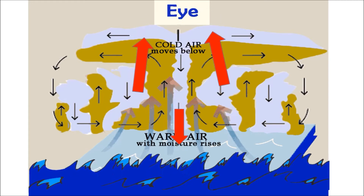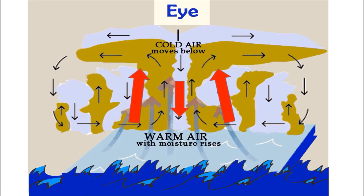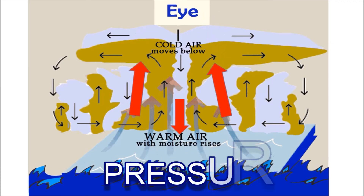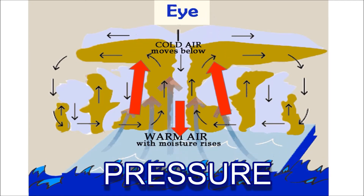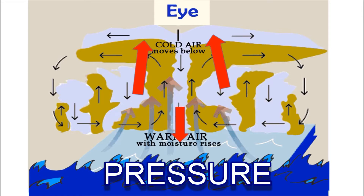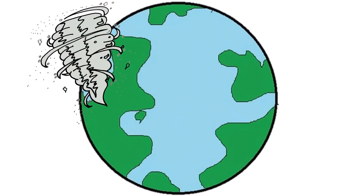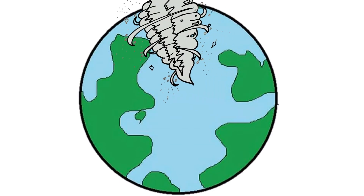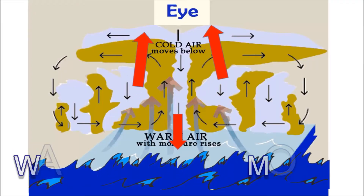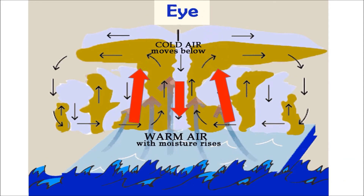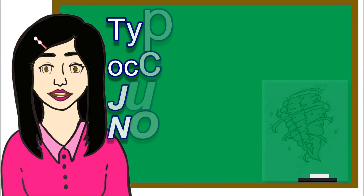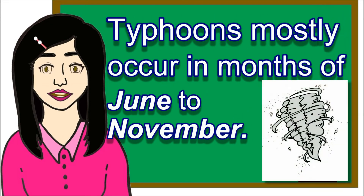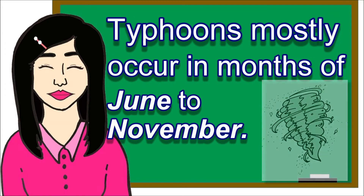A typhoon forms when winds blow into areas of the ocean where the water is warm. These winds collect moisture and then rise while colder air moves in below. This creates pressure which causes the winds to move very quickly. The winds rotate or spin around a center called an eye. The more warm air and moisture, the more intense the wind gets. While typhoons can occur any time of the year, conditions are most likely right for them to happen between June and November.